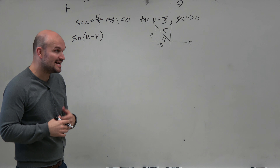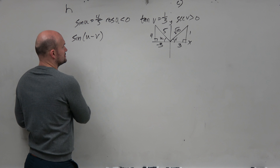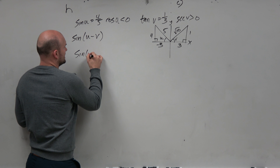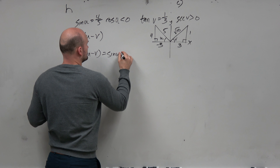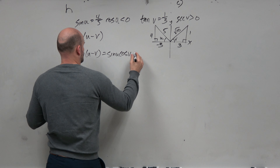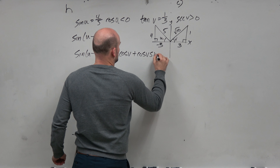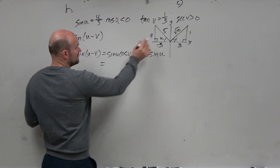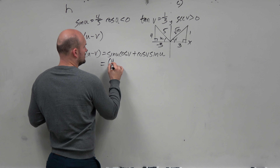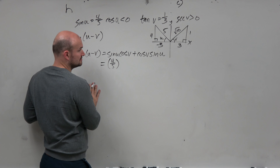Tangent is opposite over adjacent. So tangent is positive in the first and the third quadrant. Secant — well, secant is 1 over cosine. Cosine is positive for anything to the right of the y-axis. So if it's right of the y-axis and tangent has to be positive, then it has to be in the first quadrant, because the third quadrant is not to the right of the y-axis. So then v looks something like this. Those are both right triangles — opposite over adjacent. We can do the Pythagorean theorem: 3 squared plus 1 squared is 10, so it's the square root of 10.